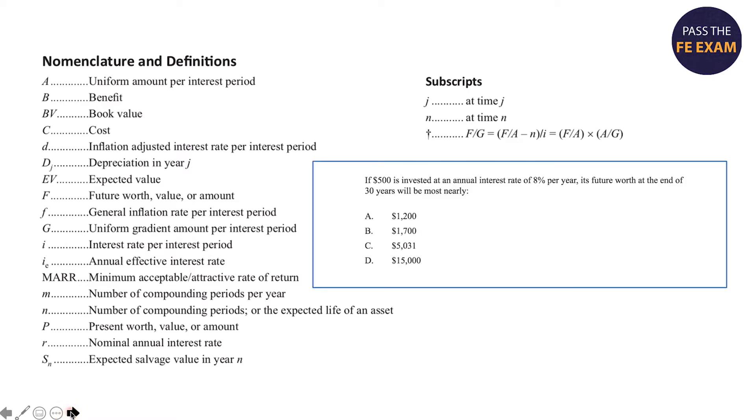So let's take a look at our practice problem again. If $500 is invested at an annual interest rate of 8% per year, its future worth at the end of 30 years will be most nearly what? So what do we have here? First of all, we have $500 if it is invested today. So that's P or the present worth of the amount that we have today. Then we have the interest rate of 8% per year, which is designated as i, your interest rate per interest period. Important to note that this is per year. This is where these problems can get tricky. They could say per month, and then that's going to change your calculation. And then its future worth at the end of 30 years will most nearly be what? That 30 is N, or the number of compounding periods of the expected life of an asset. So we have P, N, and i.